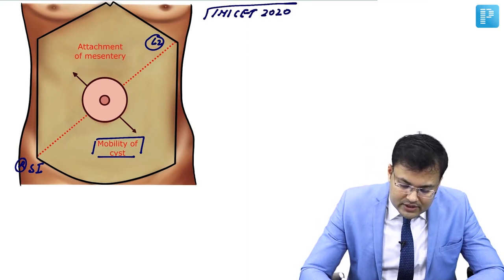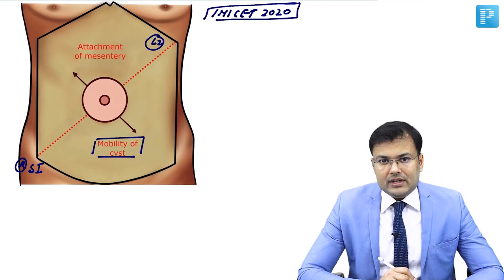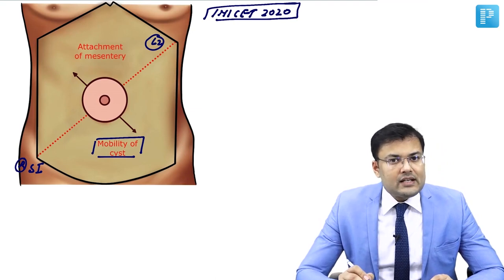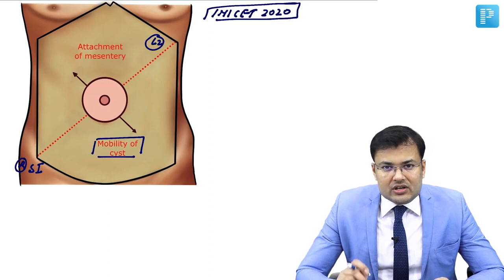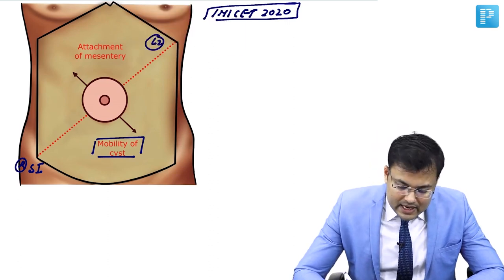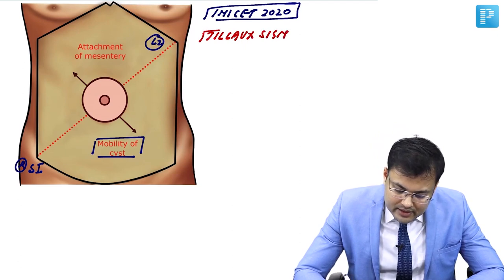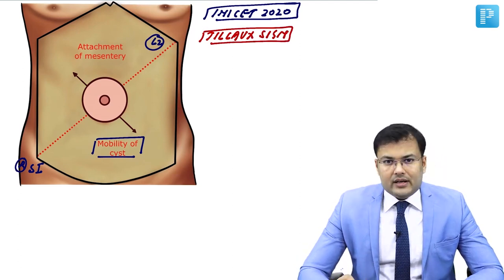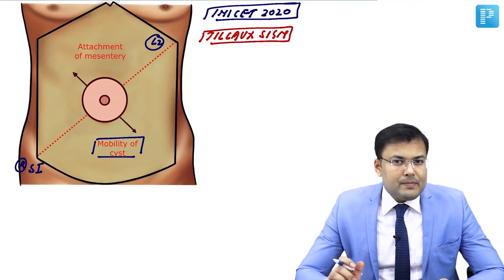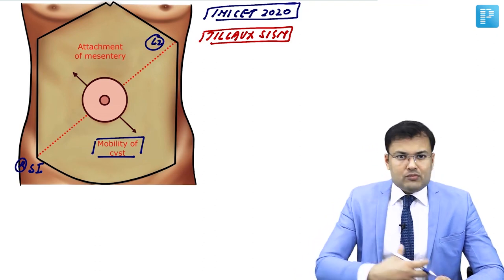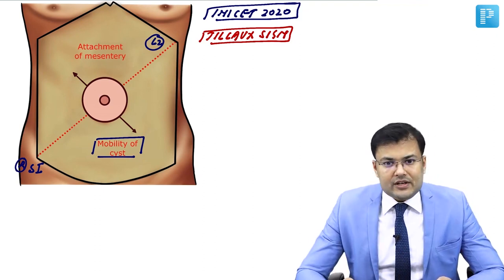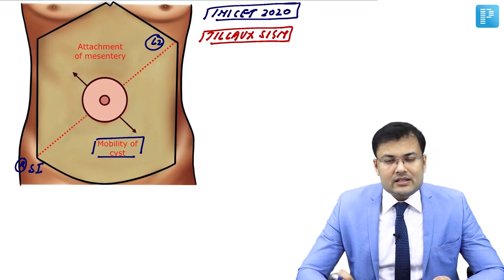This was the question asked for the first time in INICET 2020. Previously they were asking about Tilox triad, but this time they asked about Tiloxine. So what is Tiloxine? The mesenteric cyst moves perpendicular to the attachment of mesentery — this is Tiloxine.